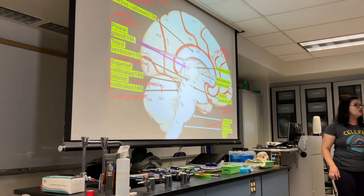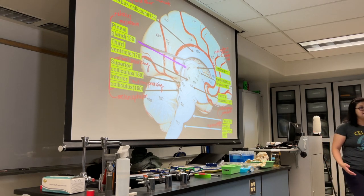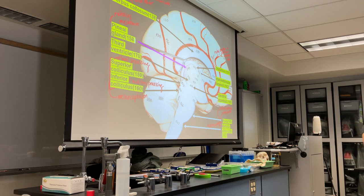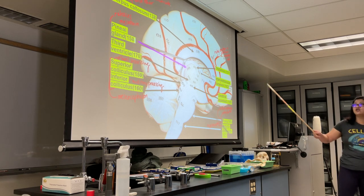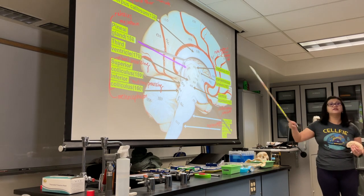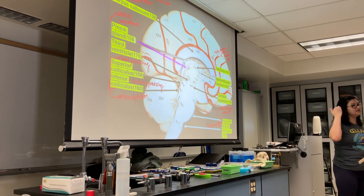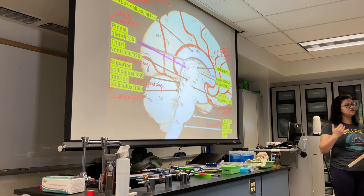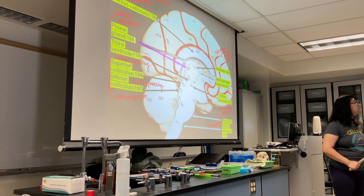If you have something like seizures or epilepsy, one of the ways they surgically treat it is to actually cut the corpus callosum to prevent the left and right sides from communicating with one another and stop the misfiring from going through.